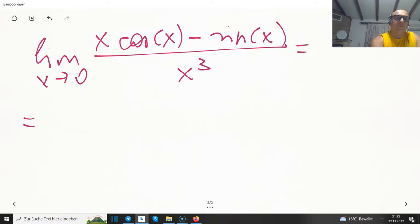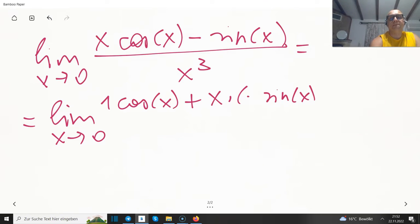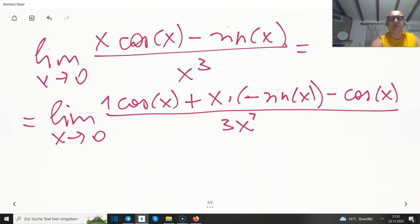So perfect case for L'Hôpital, since all the functions are differentiable. We have a product rule, so it's 1 times the cosine of x, plus x times minus sine of x, minus cosine of x, divided over 3x². So what's happening in the numerator? Well sadly we do have cosine minus cosine, it's getting away, and we can cancel x² and x, which is rather nice.